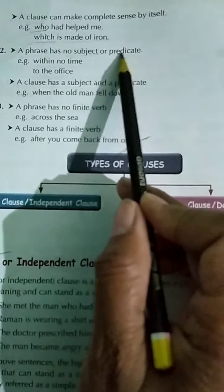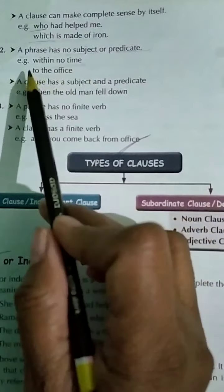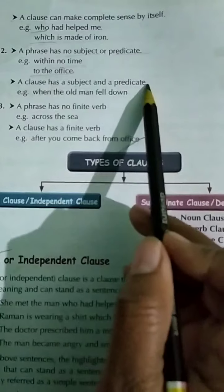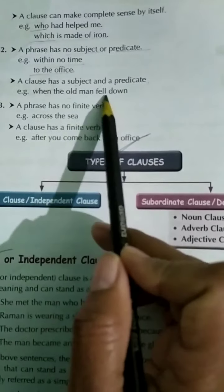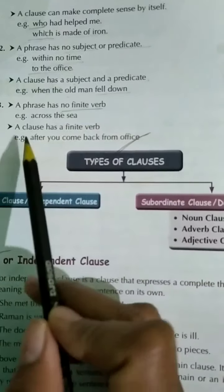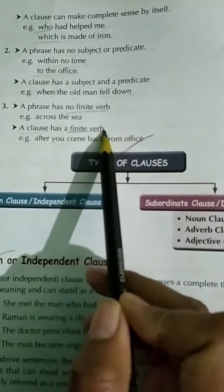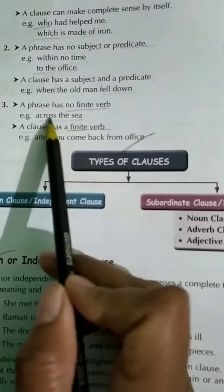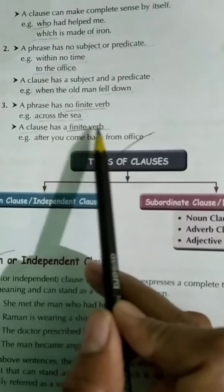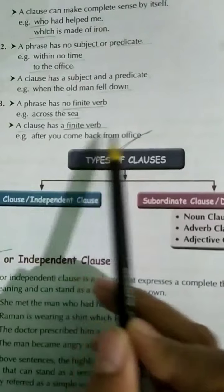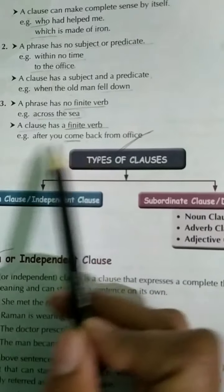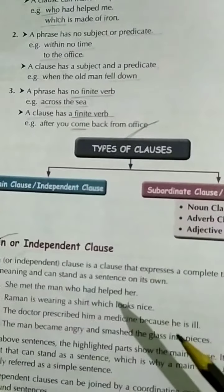A phrase has no subject or predicate — for example, 'within no time' or 'to the office.' A clause has both a subject and a predicate, like 'when the old man fell down.' A phrase has no finite verb, whereas a clause has a finite verb — for example, in 'after you come back from office,' 'come' is the finite verb.